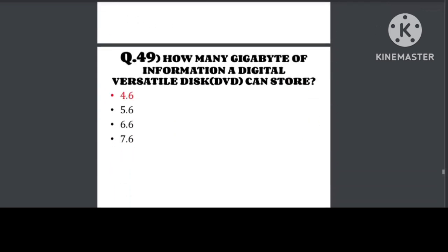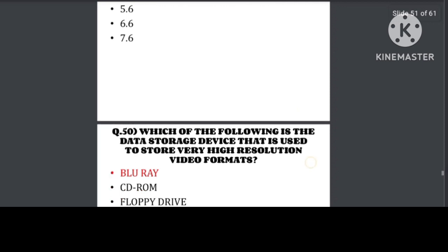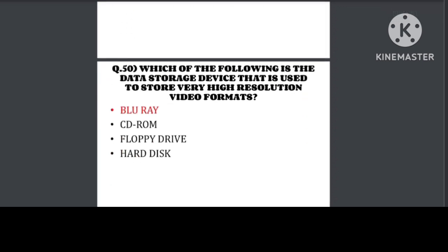Question number 49: How many gigabytes of information can a digital versatile disk (DVD) store? A DVD can store 4.6 gigabytes of information. Question number 50: Which of the following is the data storage device used to store very high resolution video formats? Answer: Blu-ray.